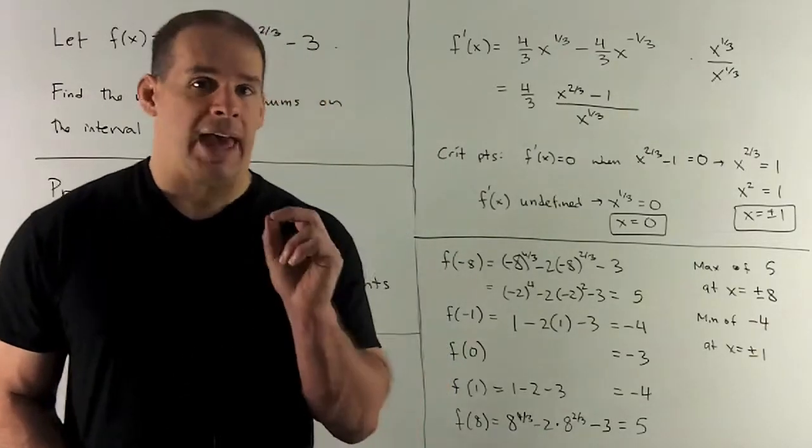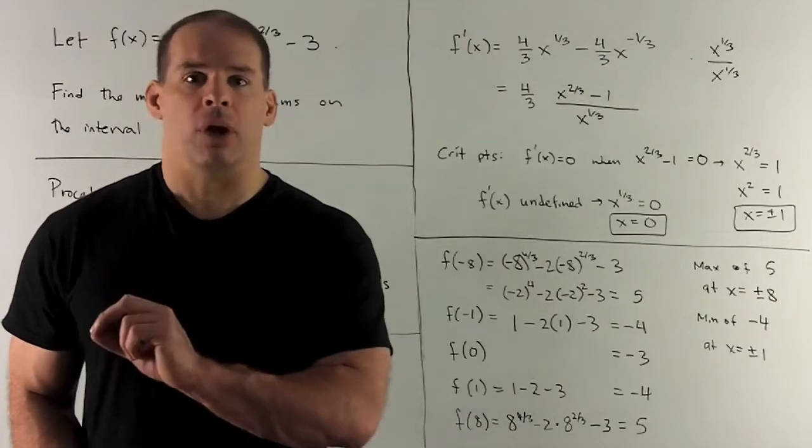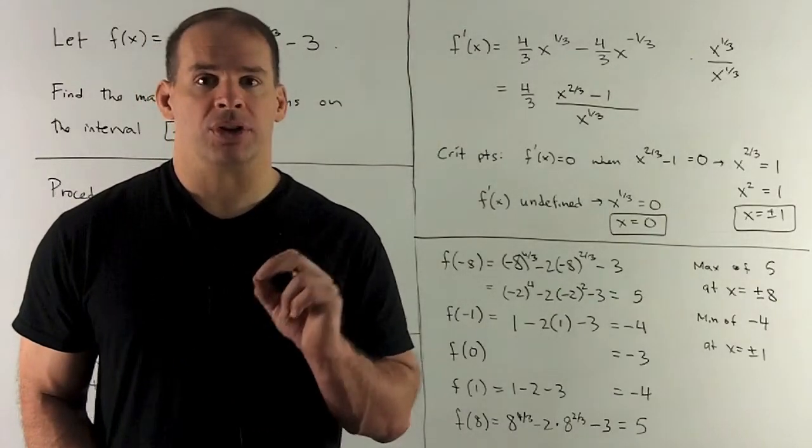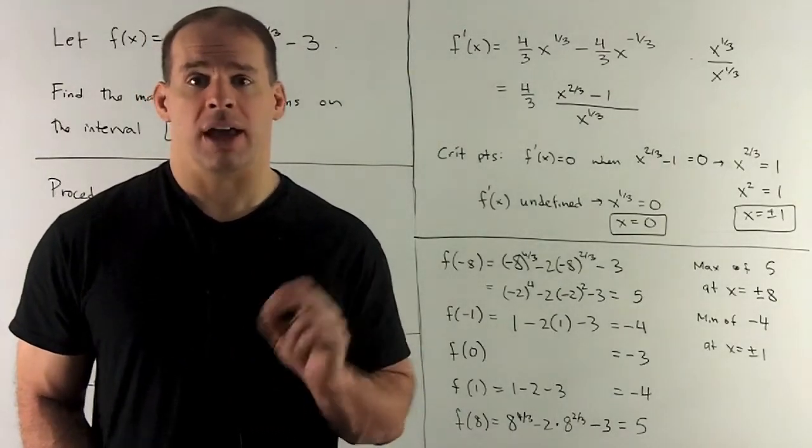When I do that, we'll have 4/3 out in front. I'm going to have x^(2/3) - 1 over x^(1/3).